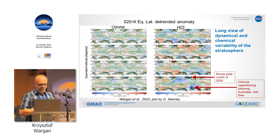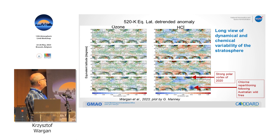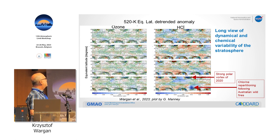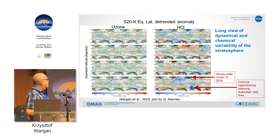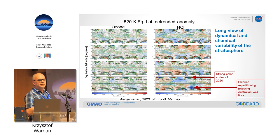This is now a longer view — the entire reanalysis for ozone and HCl as a detrended anomaly as a function of time and equivalent latitude at the 520K potential temperature level. Looking at HCl, you can basically see all the things we know and have written papers about: variability of the northern as well as southern hemisphere polar vortex, the strong ozone depletion in 2020, and the very depressed HCl from the Australian New Year's fires — lower than anywhere else in that record. This is the chlorine repartitioning.